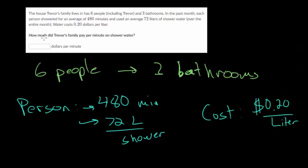Our question is, how much did Trevor's family pay per minute on shower water? So pay per minute. These are going to be our units, dollars per minute in the end. To get to the cost per minute, we know how much it costs per liter, so we need to figure out how many liters we're using in a month. Keep in mind, we need to know how much the family pays. A lot of this information is given individually, we know what each person does on average, but we've got to remember there are six people in the house.